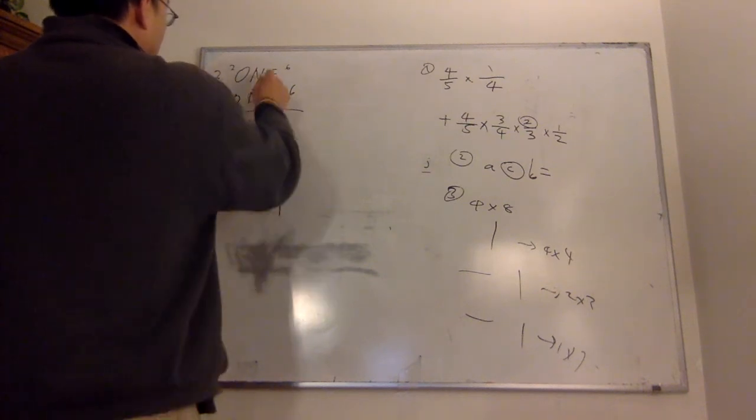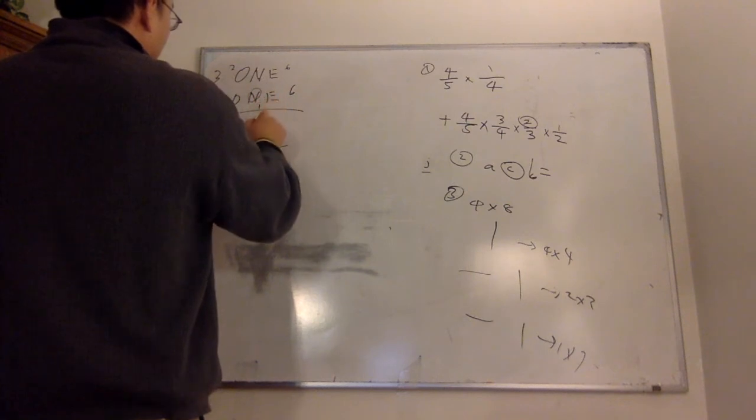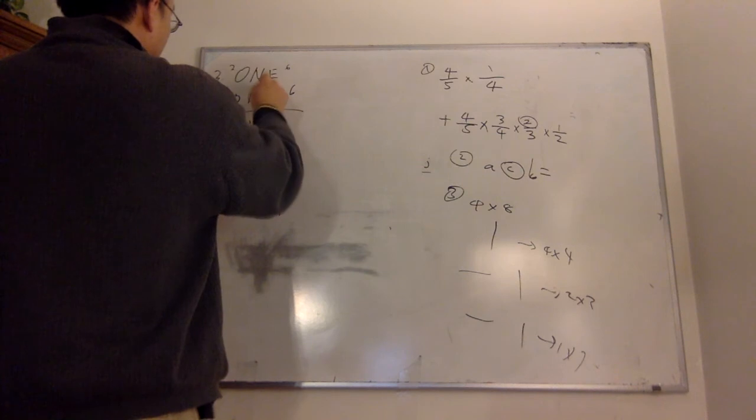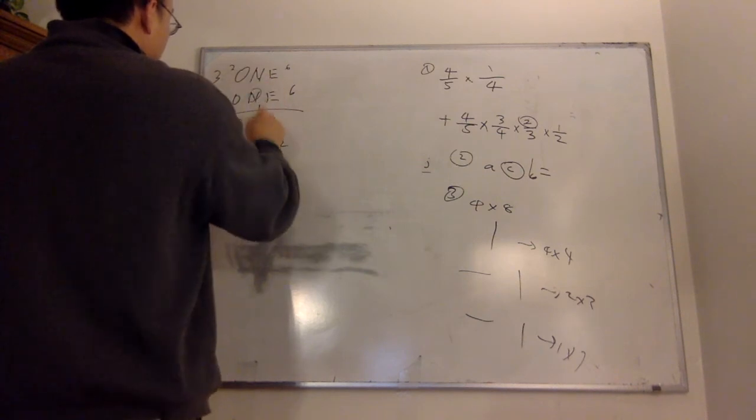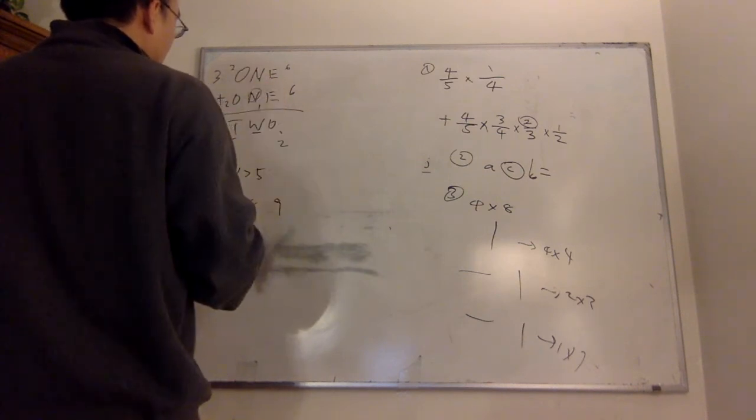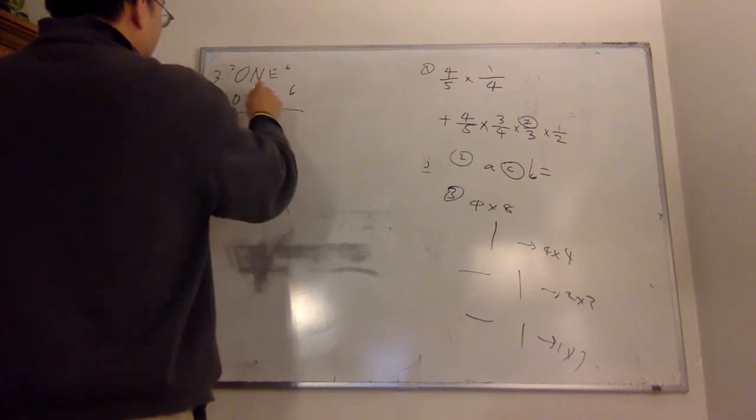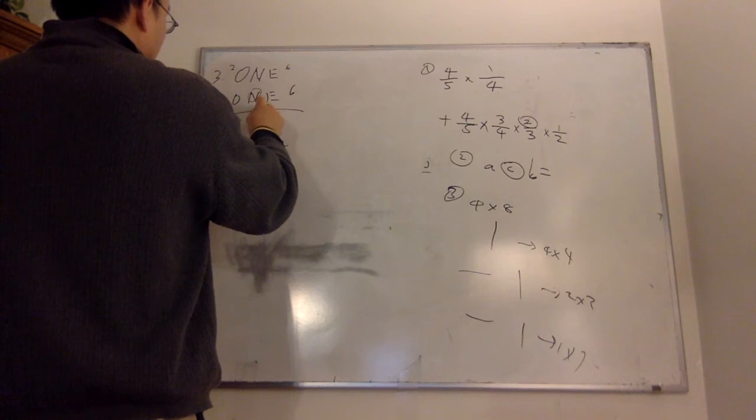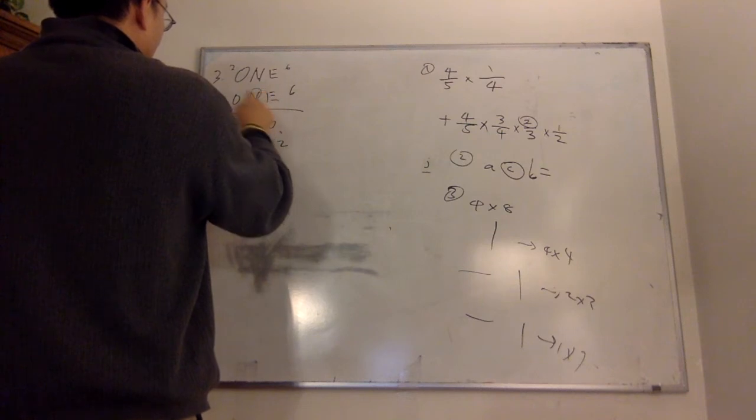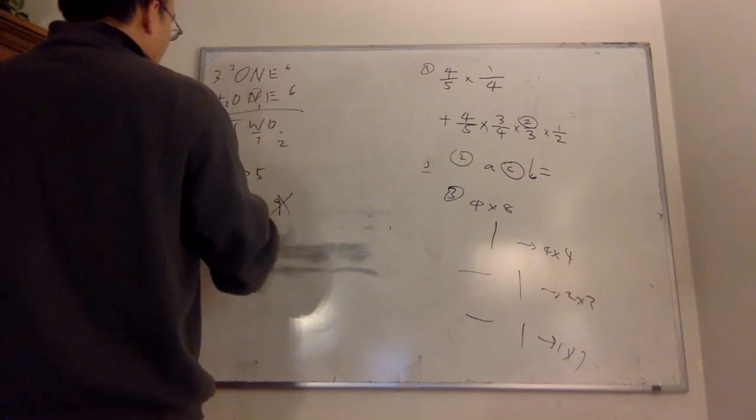9 plus 9 plus 1 gives you 19. So w will be 9, which is not allowed, because that will be the same numbers for n and w. So 9 is not okay. 8 plus 8 is 16, plus 1 is 17, which gives here 1, which gives 5. So this is okay.